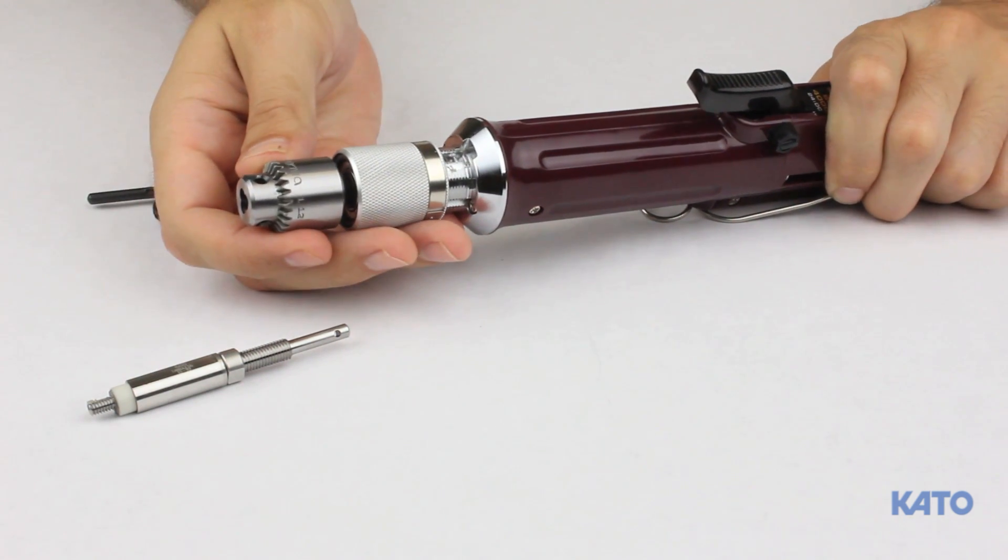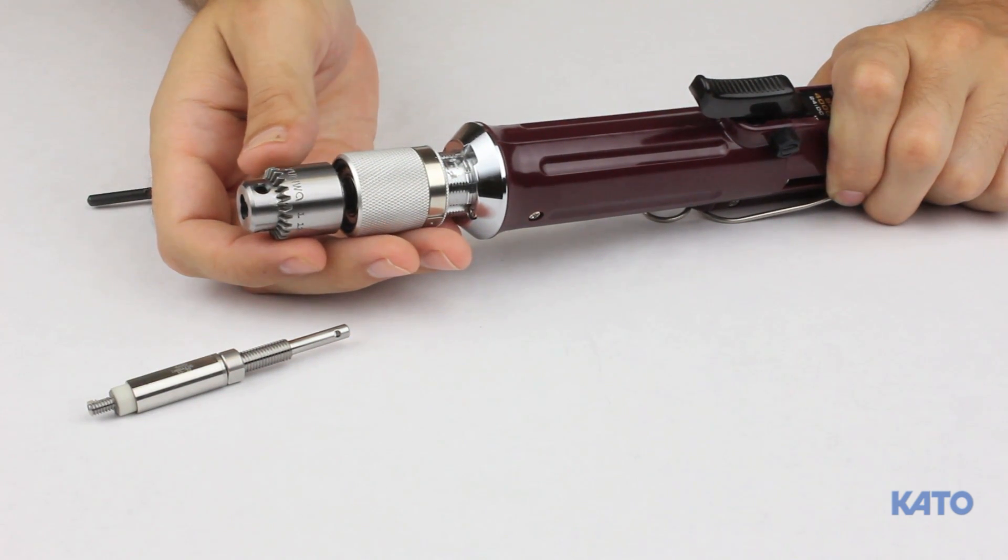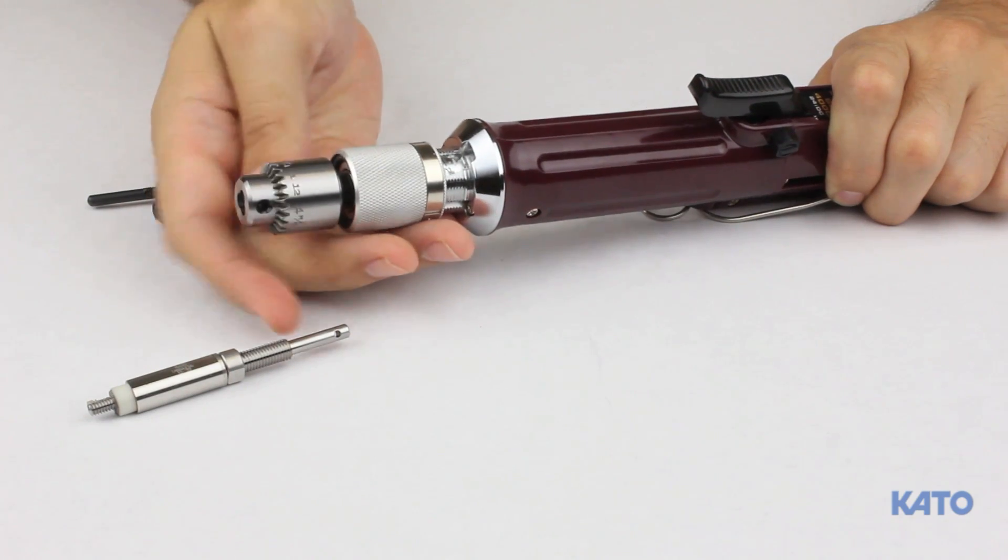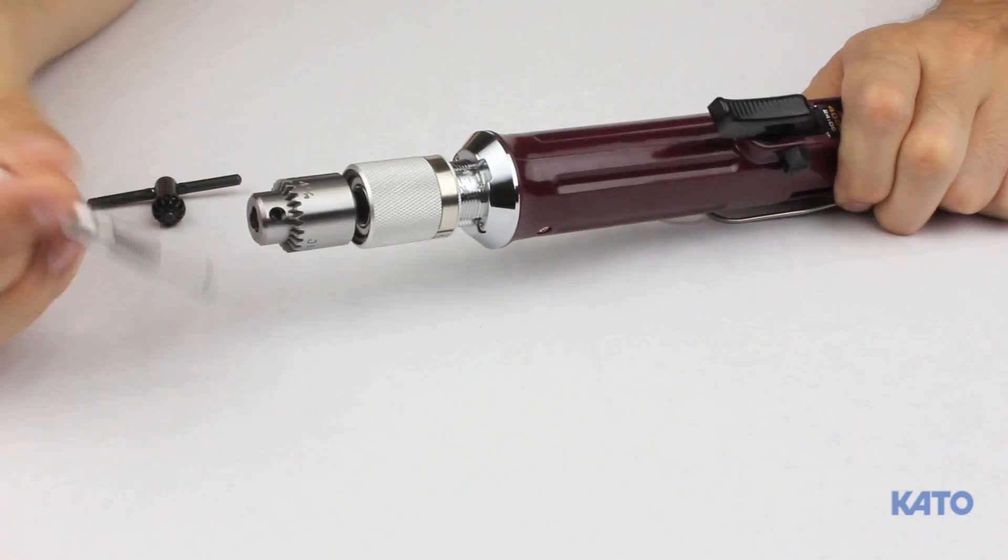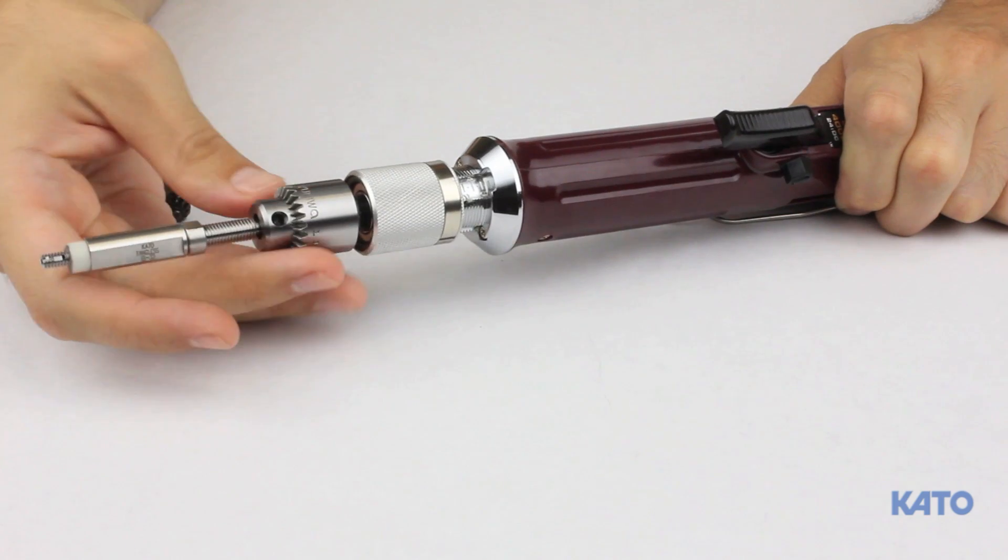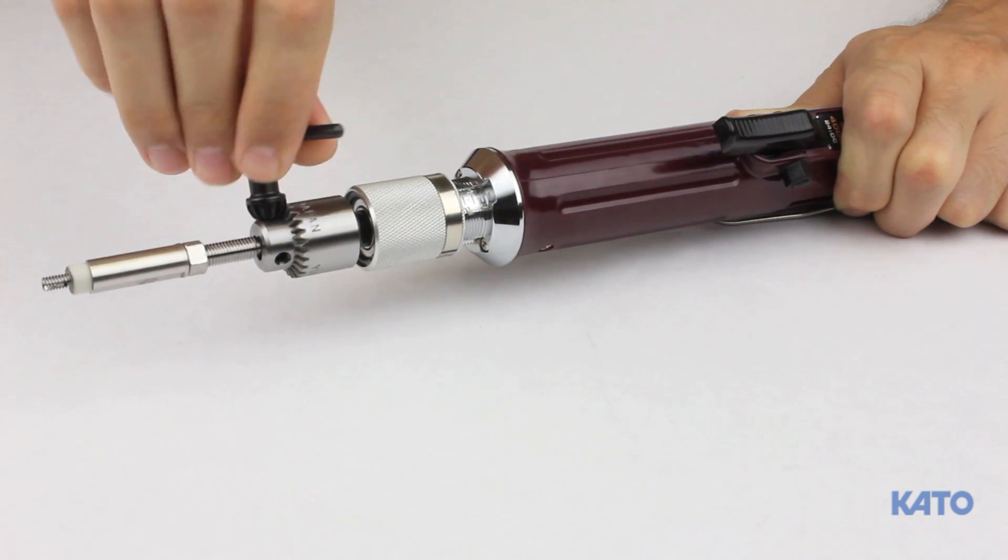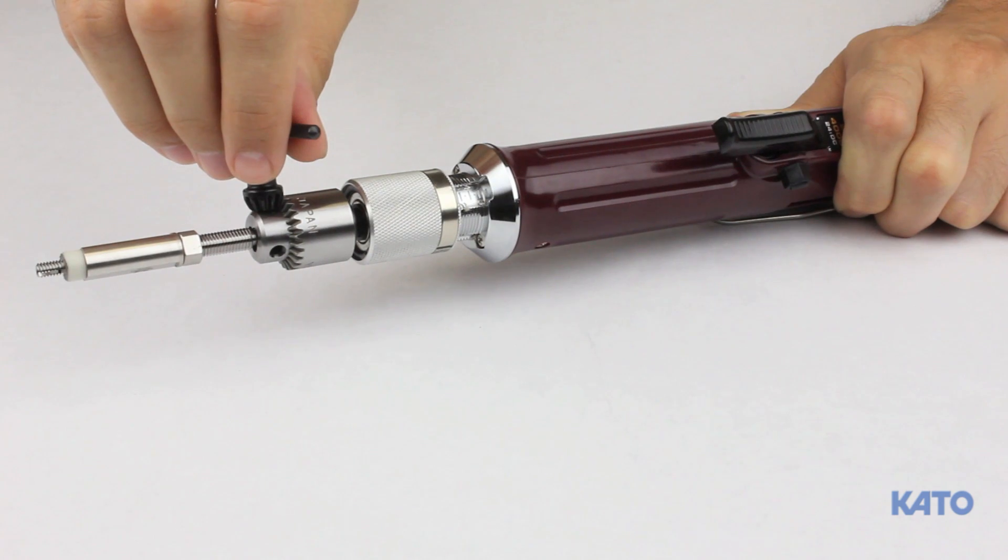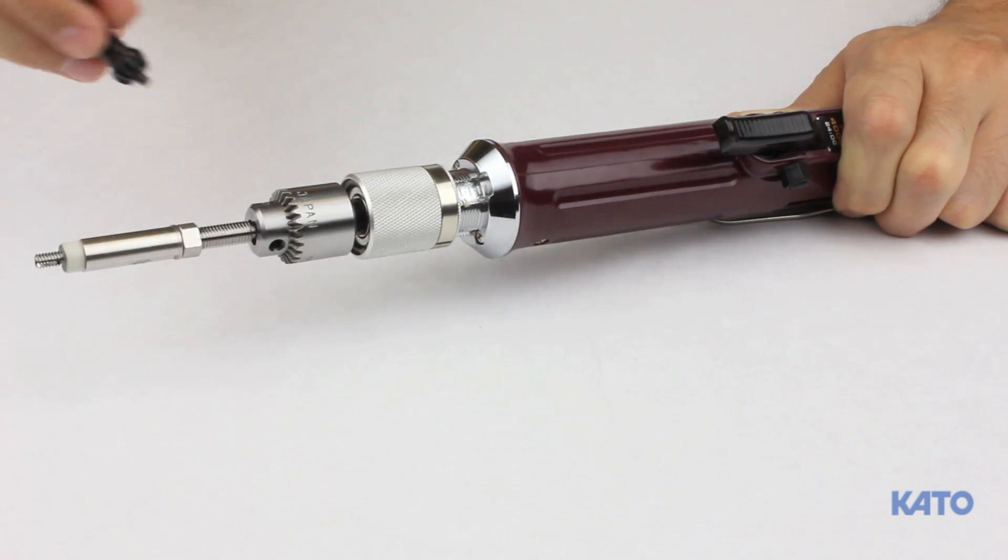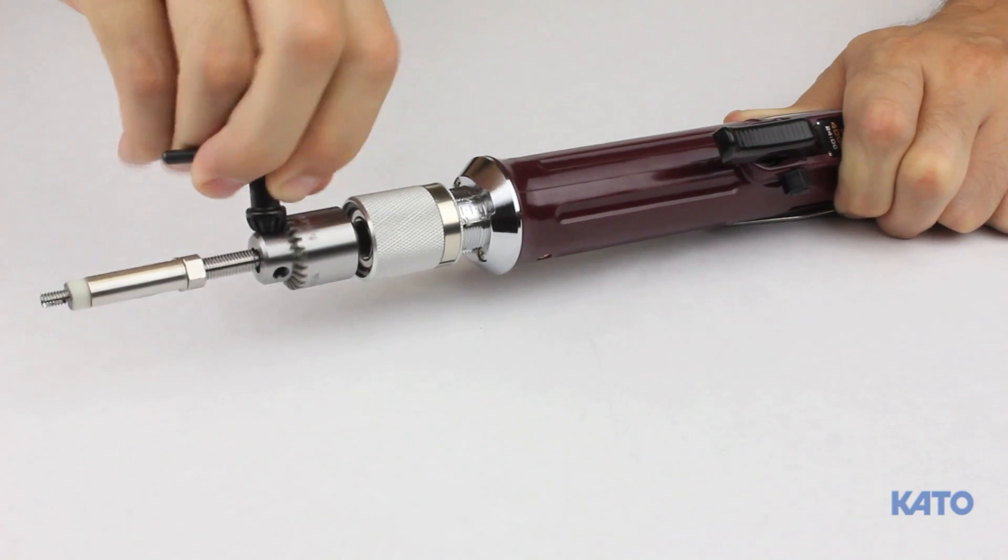At the front is the keyed chuck. Turn the chuck counterclockwise to open and then slide the mandrel into the chuck. Turn the chuck clockwise to tighten and use the chuck key to lock the mandrel in place. To remove the mandrel, use the chuck key and turn counterclockwise to release the mandrel.